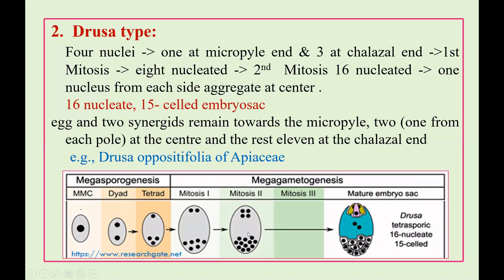Out of these nuclei, 1 from the chalazal group and 1 from the micropylar group come to the center, and cell wall formation occurs around them forming the central cell. At the micropylar end, 3 nuclei develop into 1 egg and 2 synergids. The remaining nuclei act as antipodal cells. So drusa-type has a 16-nucleate, 15-celled structure, present in Drusa oppositifolia of Apiaceae family members.